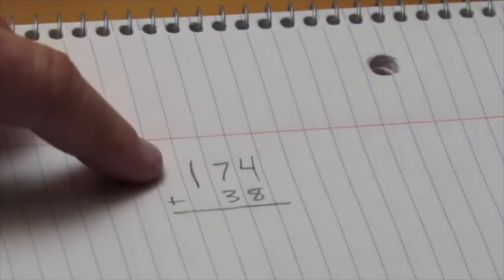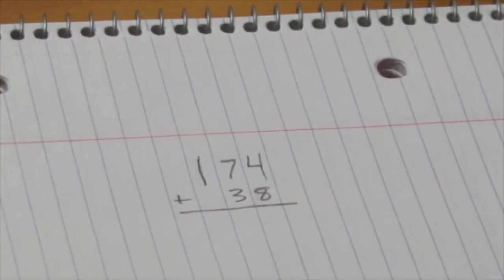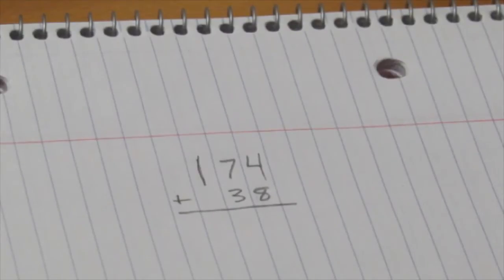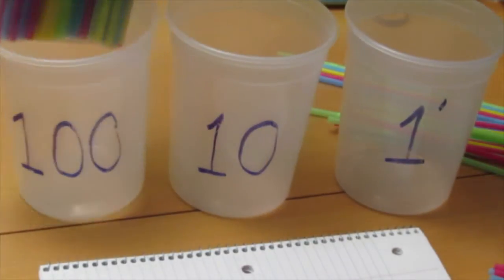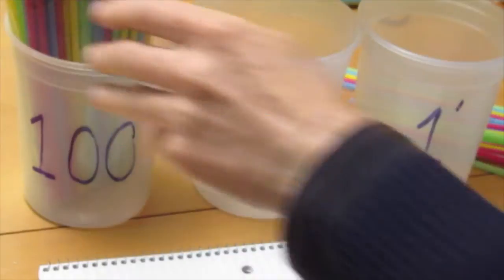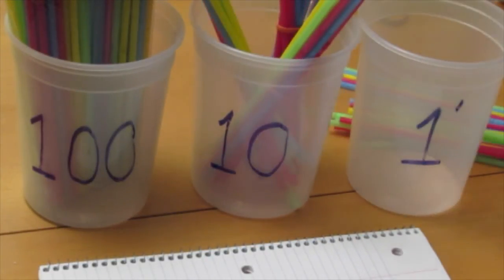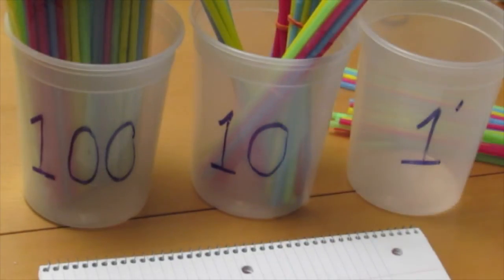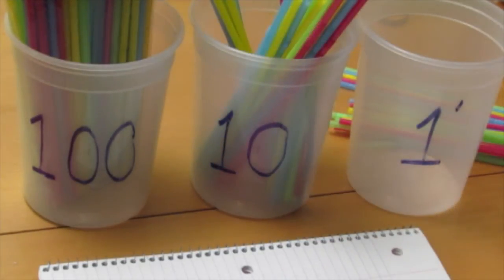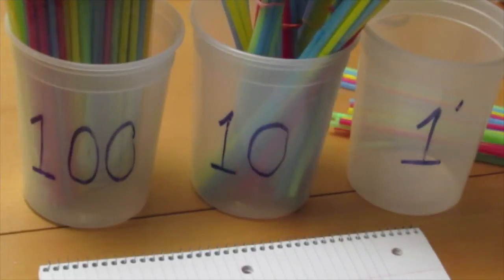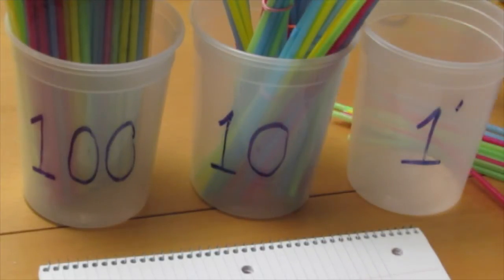In this problem, we will add 174 plus 38. We will start by putting 174 in the buckets. Here's 100. 10, 20, 30, 40, 50, 60, 70, and 4.